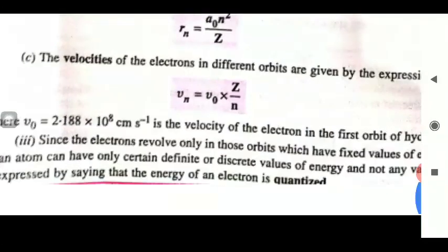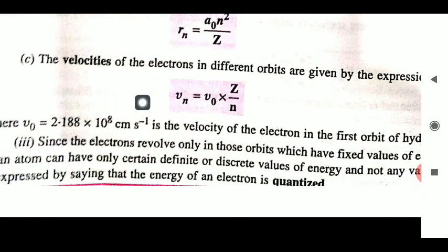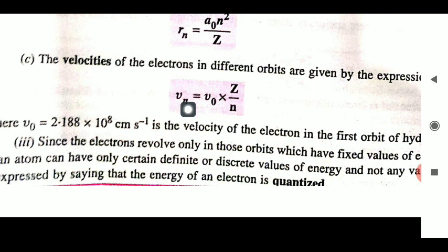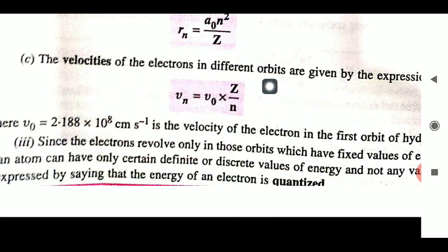The velocity of the electron in a respective orbit can also be calculated by the formula: V_N = V₀ × Z/N, where V₀ is 8.8 × 10⁸ cm/s (the velocity of the electron in the hydrogen atom), Z is the atomic number, and N is the shell number. Using this formula, we can calculate the velocity of the electron revolving in each shell.